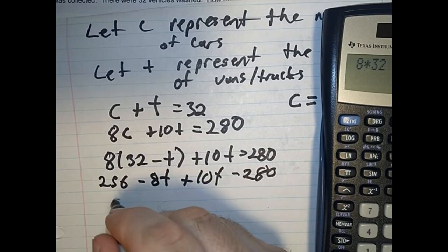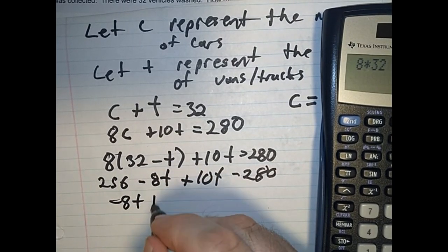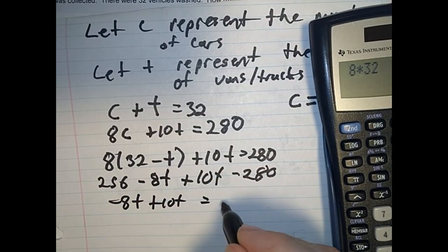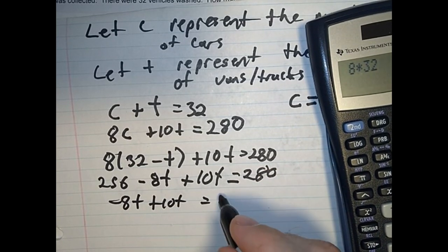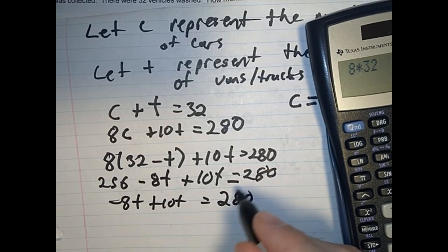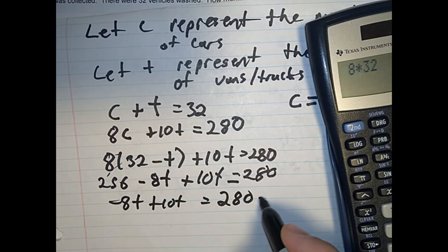Okay. The minus 8T stays here. The plus 10T stays here. Equals 280 stays here. And the 256 comes across, becomes minus 256.